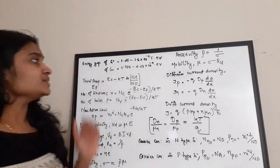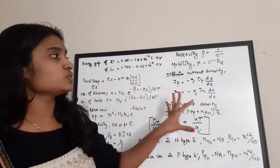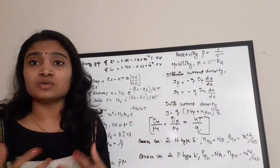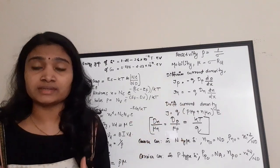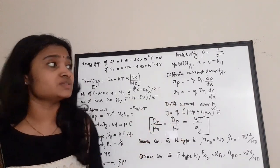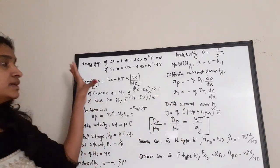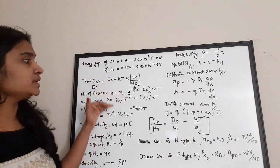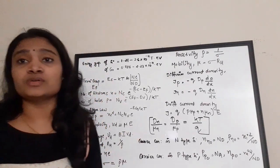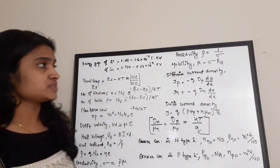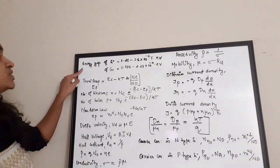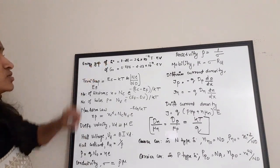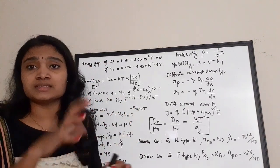Let us see the basic equations for all the carrier-related equations — that is, the hole and electron related equations, the current density, the band gap, and the Fermi gap. The first equation is the energy gap of silicon.